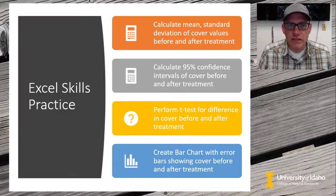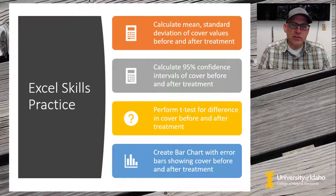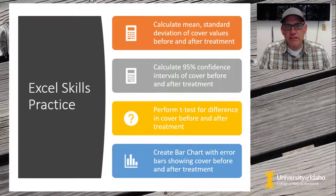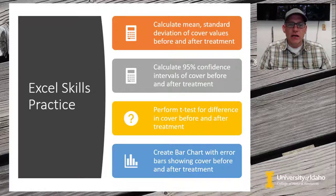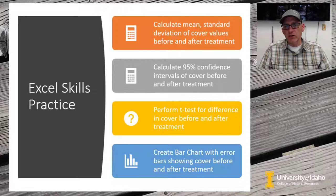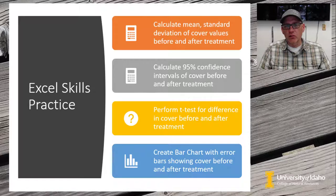Here's our game plan for this exercise. We're going to take the Restore New Mexico data from Carlsbad and start by calculating some descriptive statistics like means and standard deviations before and after treatment. Then we'll move into calculating confidence intervals around those means before and after treatment. Then we'll do some t-tests to look for differences in cover. Finally, we'll create some bar charts with error bars to visualize these data.